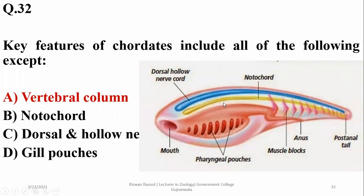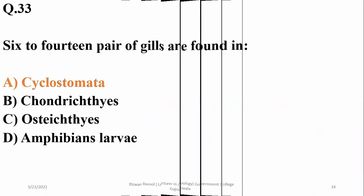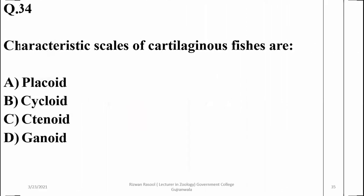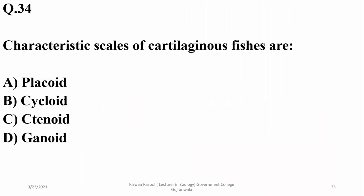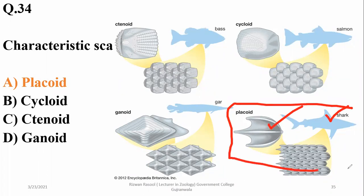Question twenty-six: six to fourteen pairs of gills are found in cyclostomata or jawless fishes. Question twenty-seven: the characteristic scales of cartilaginous fishes are placoid scales, while cycloid, ctenoid, and ganoid are scales of bony fishes — so alpha is the right option. Placoid scales are found in cartilaginous fishes such as sharks.